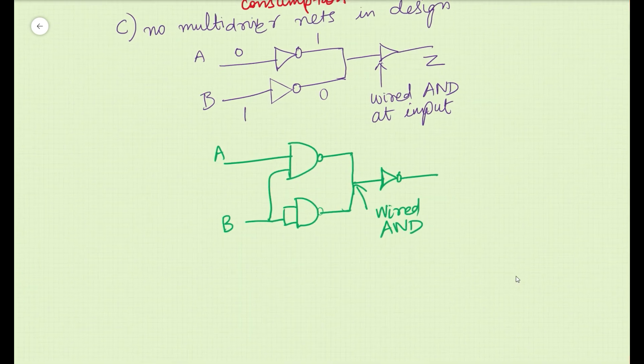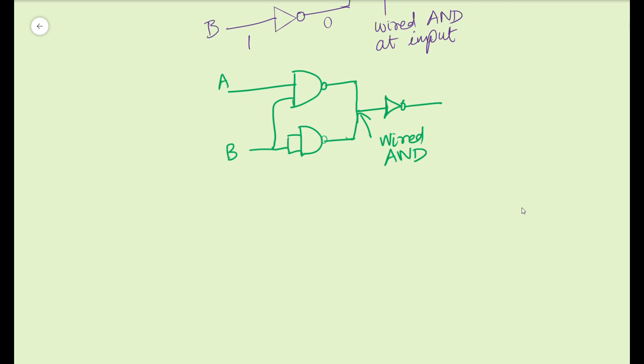The next very important sanity check related to netlist is combinational feedback. Combinational feedback should not be present in the design. Let us take an example. Say we have an XNOR gate connected to logic 1, logic high input, and the output Z is going to feedback.